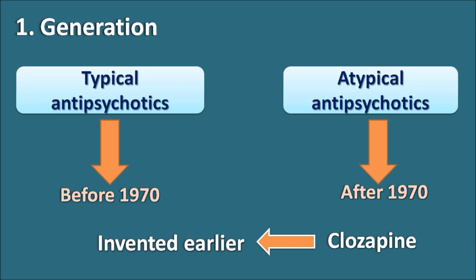Clozapine is considered atypical for two reasons: even though it was invented before 1970, its clinical use became more pronounced after 1970, and clozapine produces fewer extrapyramidal side effects and works through a multiple receptor mechanism. This is why it is categorized as an atypical antipsychotic.